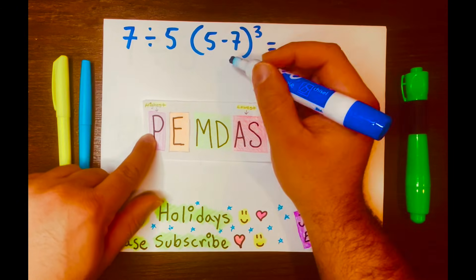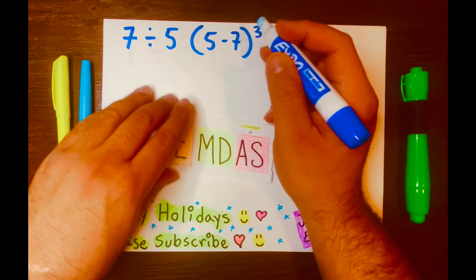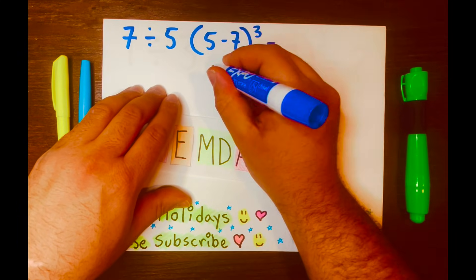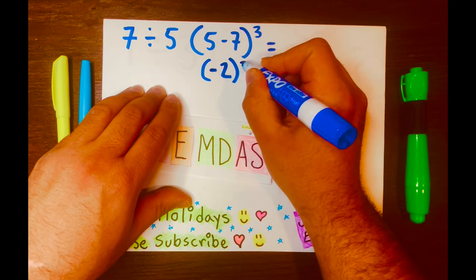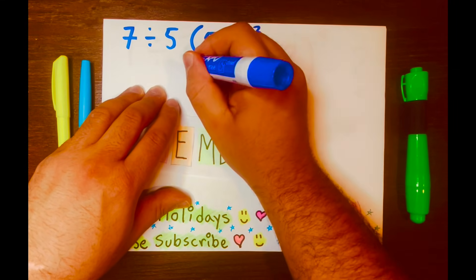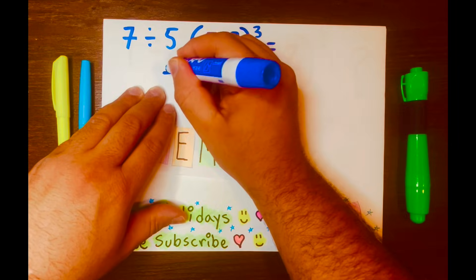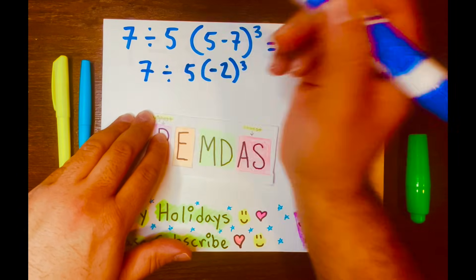Parentheses will go first. So, 5 minus 7 equals negative 2. And I'll keep the brackets, write the 3 there, bring down the 5, the division symbol down, and the 7 down.